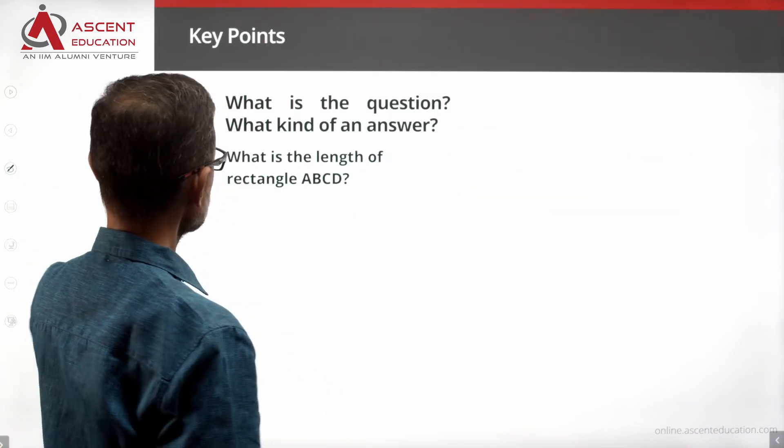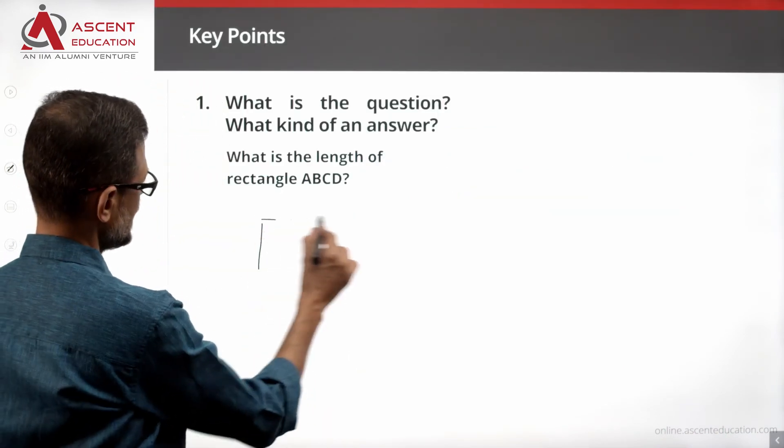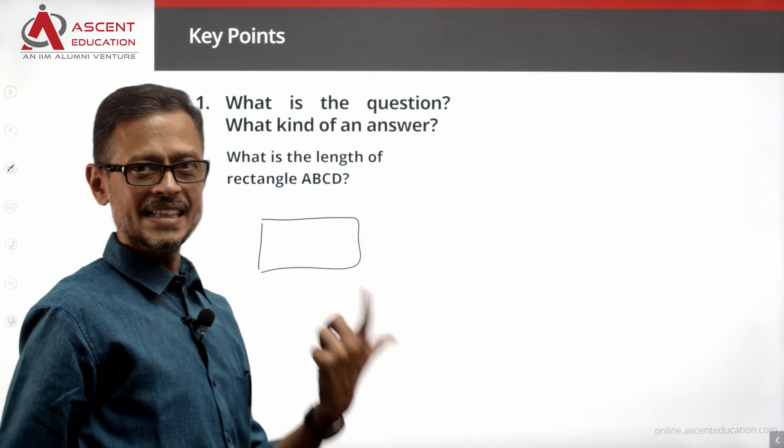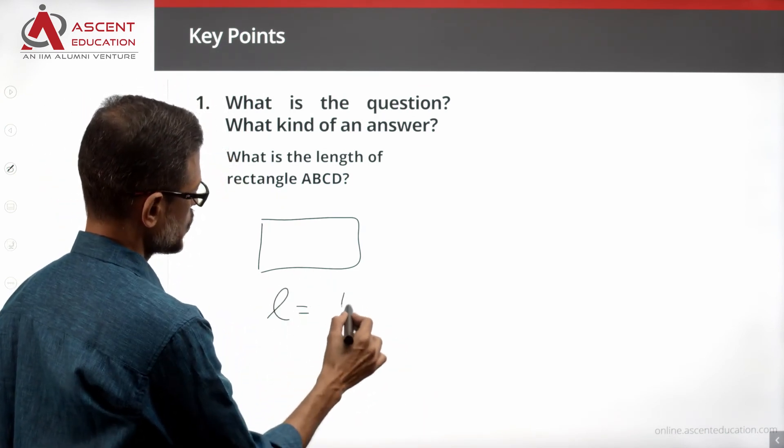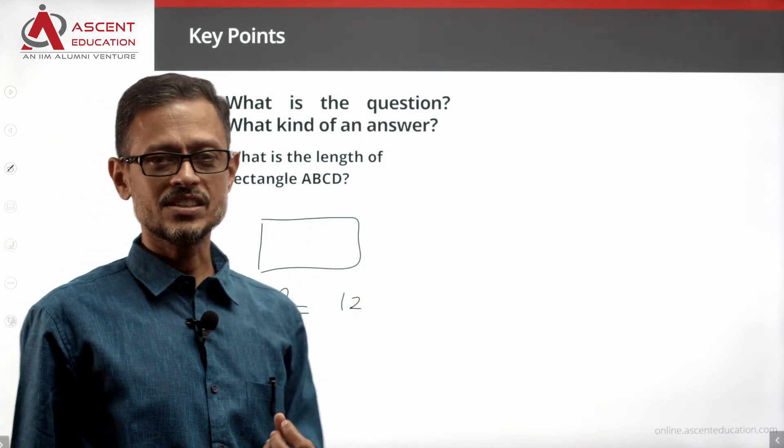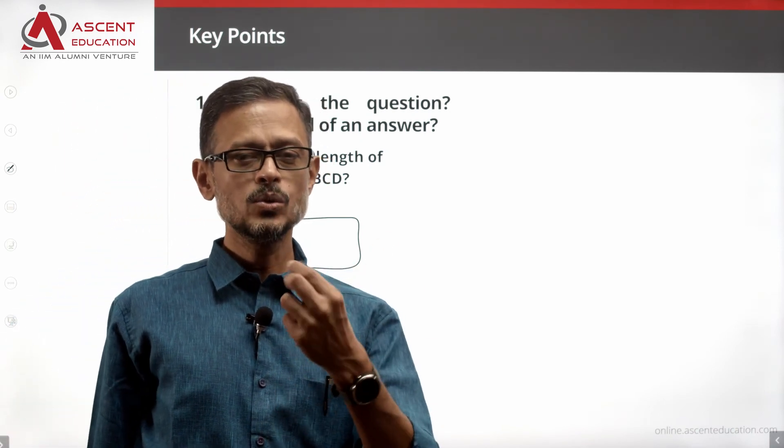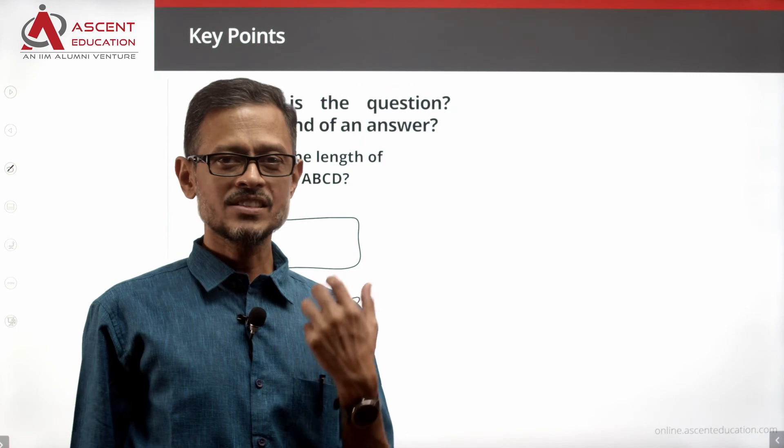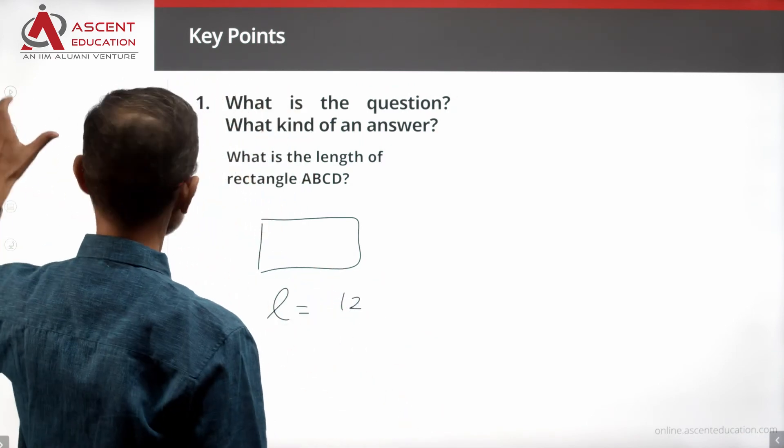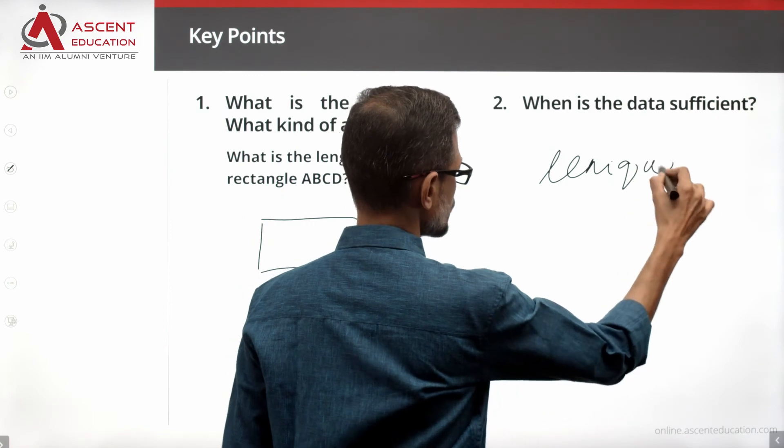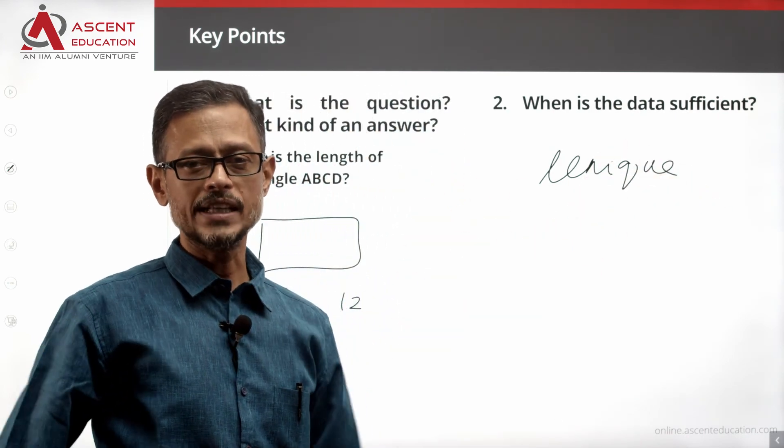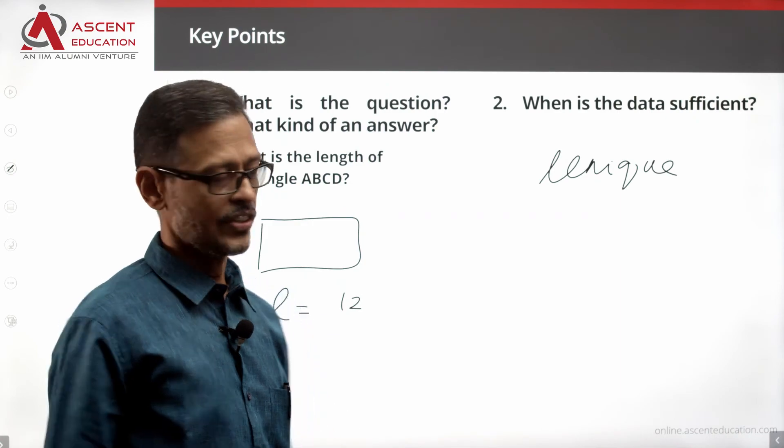What is the question? What is the length of this rectangle ABCD? So let's say the length of this rectangle is equal to L units, or the length of the rectangle is equal to 24 units. This is a number. The answer to the question is a number. Then the data is sufficient when we have a unique value. One answer, not we cannot say 6 or 8, 11 or 14. That means the data is not sufficient.